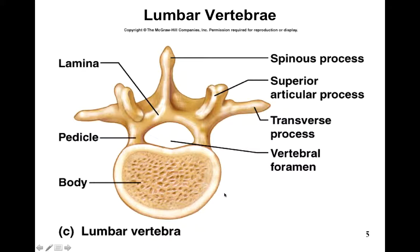Starting with the lumbar vertebrae because this is easier to show all the different parts of a singular vertebra. This is the anterior side, and this is posterior. A single vertebra has a body — this part here — which really supports the weight of the person, so this is the weight-bearing portion. The transverse processes stick out laterally, and the spinous process sticks out posteriorly.